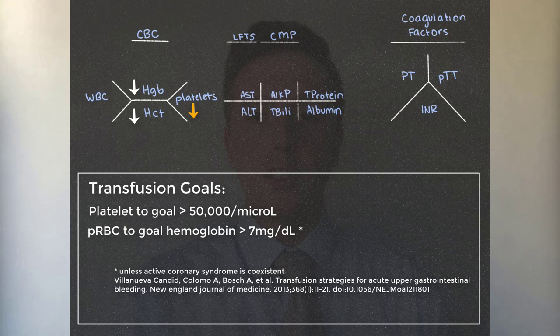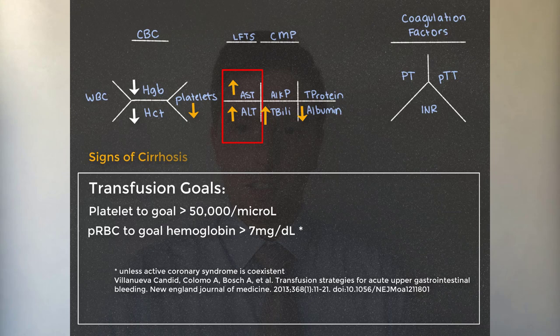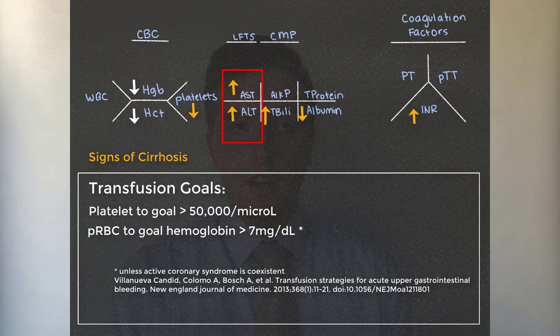For your CMP, you're looking for signs of cirrhosis — elevated LFTs, elevated bilirubin — and you want to make sure any electrolyte abnormalities are addressed. For the INR, in patients you are going to intervene on, you want the INR to be less than two, preferably, in most cases.